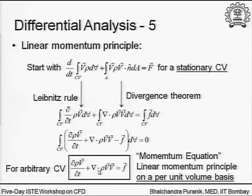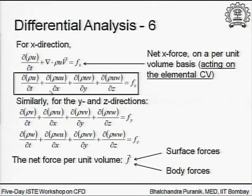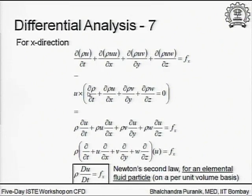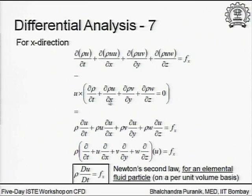This was the vector form, specifically written out for the x-direction and similarly for y and z. We also looked at how to obtain the non-conservative form of the momentum equation starting from the conservative form. The math manipulation involved subtracting u multiplied by the continuity equation from the conservative form.